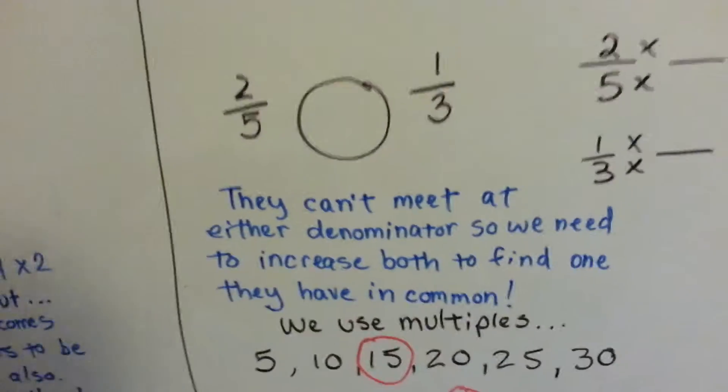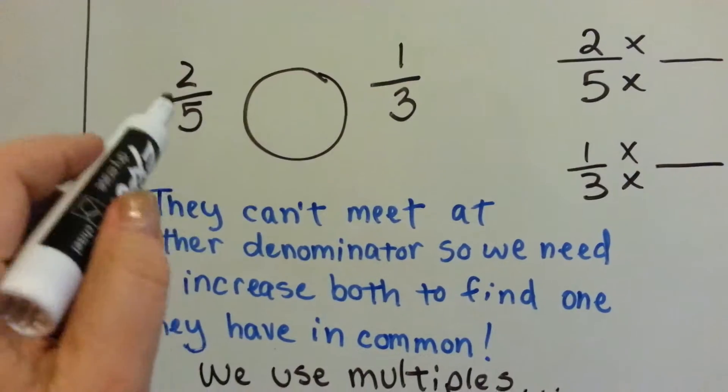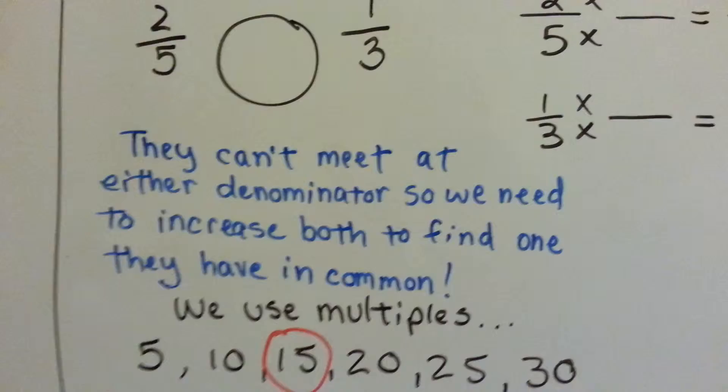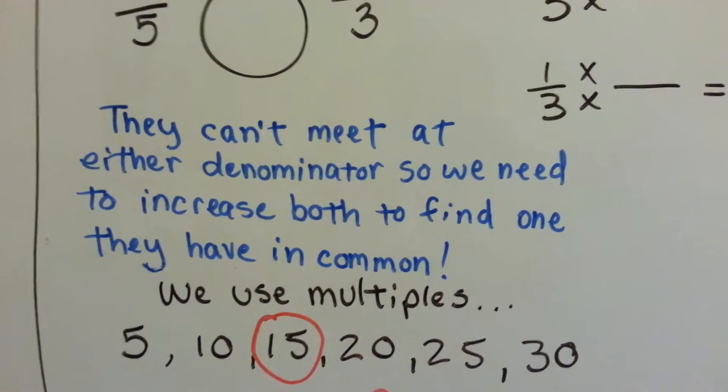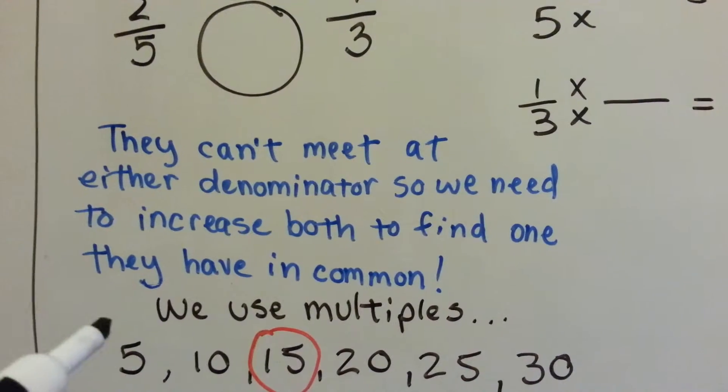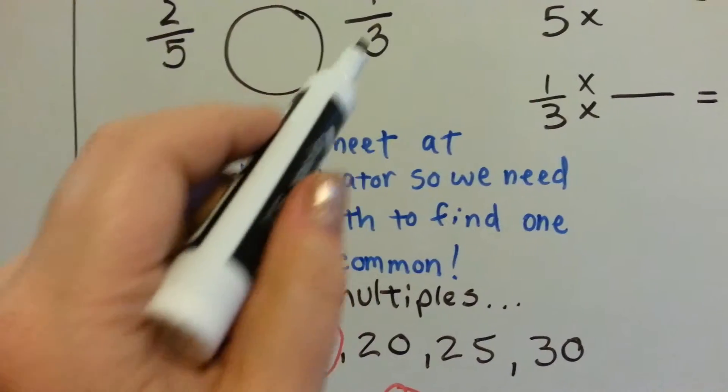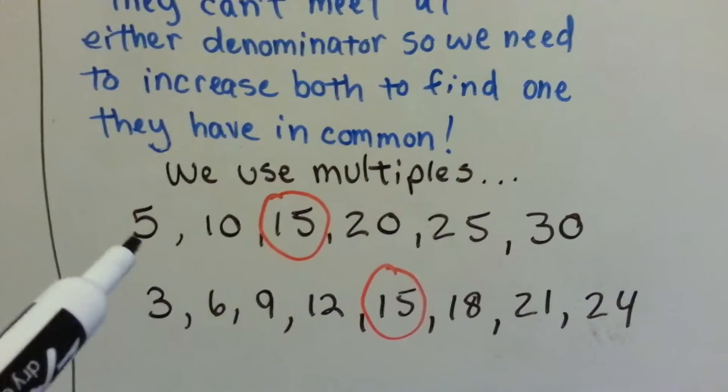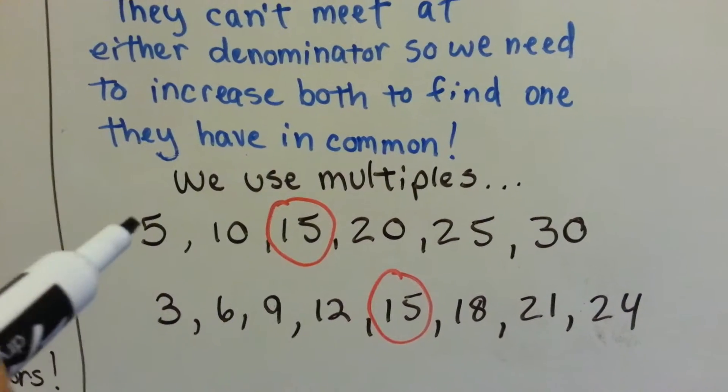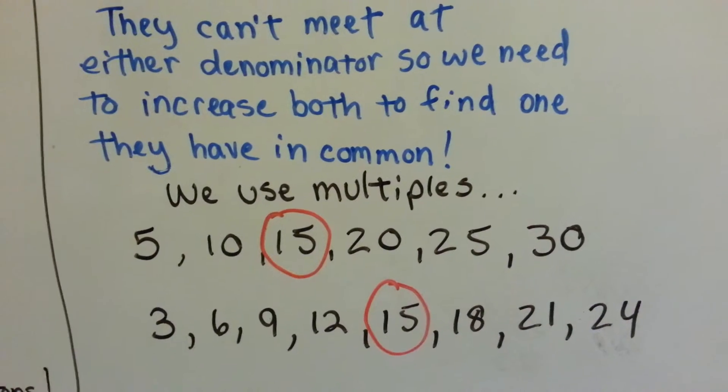Now, what happens when you've got two numbers like 2 fifths and 1 third and they can't meet at the 5's house and they can't meet at the 3's house? What do you do then? They can't meet at either denominator. So we need to increase both of them to find one multiple that they have in common. So what we do is we take the 5 and the 3 and we list their multiples. Multiple 5's would be 5, 10, 15, 20, 25, 30, and so on.